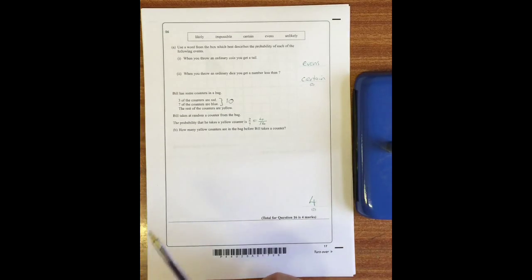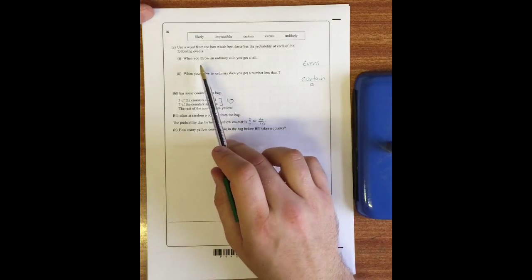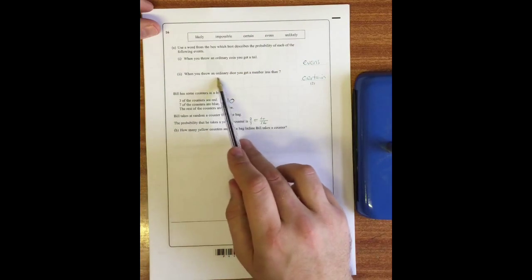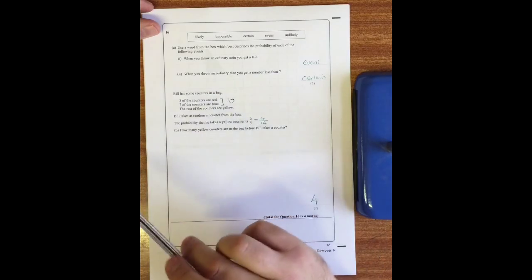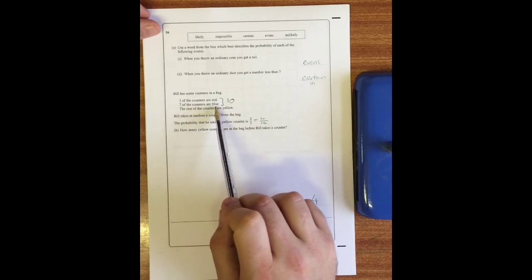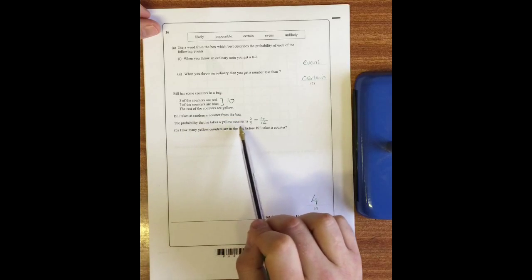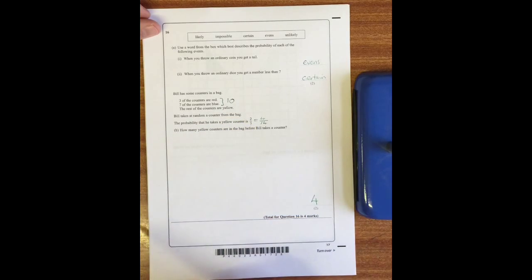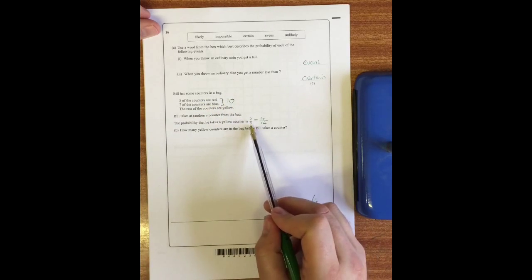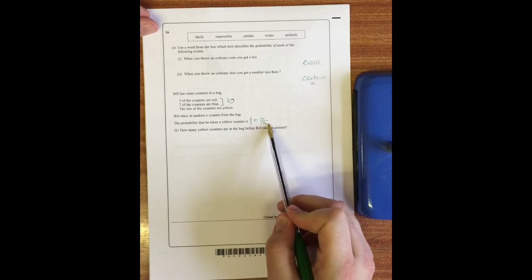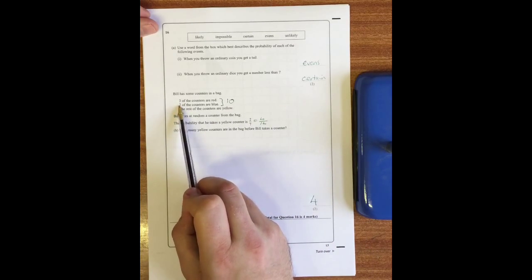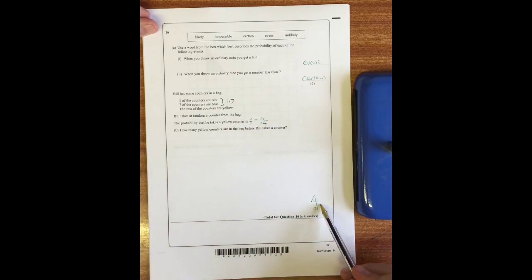Question 16: use a word from the box that best describes the probability of each of the following events. When you throw an ordinary coin you get a tail - well there's only heads or tails so the answer is evens. When you throw an ordinary dice you get a number less than seven - well all numbers on an ordinary dice are less than seven so that will be certain. Bill has some counters in a bag: three reds, seven blues, and the rest are yellow. He takes a counter at random and the probability of it being yellow is two sevenths. How many yellows are there in the bag? Well we can see that this fraction is out of seven and we've already got 10 counters in the bag, so this must have been cancelled down. If we multiply that up, that would be four out of 14, so that means there are four yellow counters out of 14 all together. Three and seven and four would give me 14, so that would work. So the answer is four yellow counters.